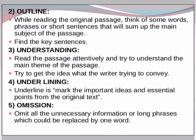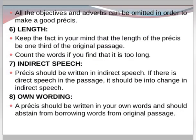The fifth rule is omission. Omit all unnecessary information or long phrases that could be replaced by one word. Remove unnecessary words, information, and elaboration — if you can express something in one word, do so. All adjectives and adverbs can be omitted in order to make a good precis.